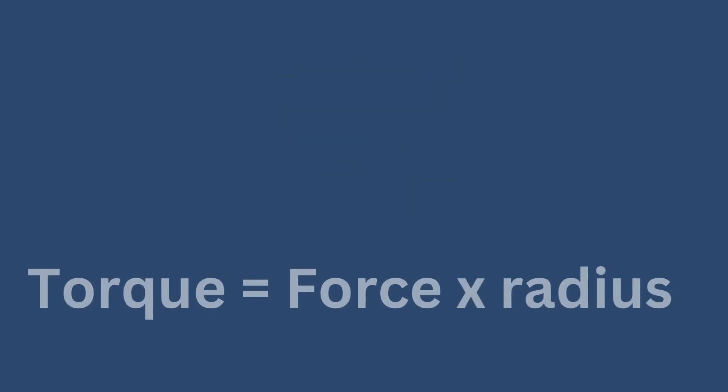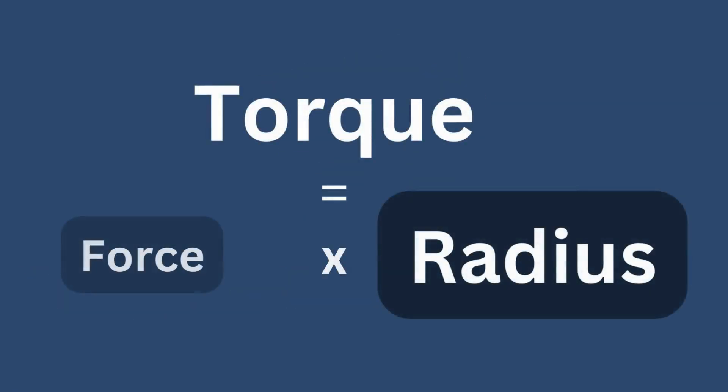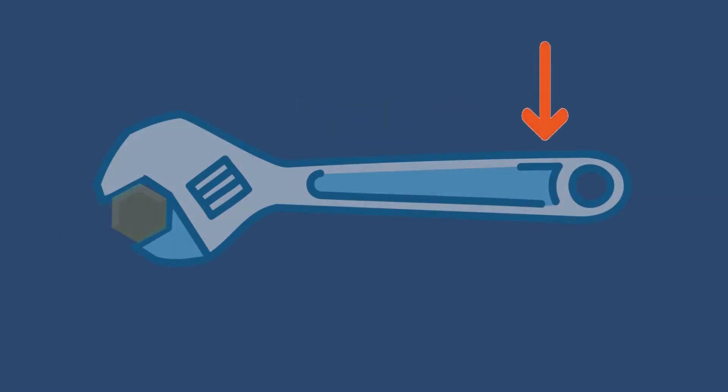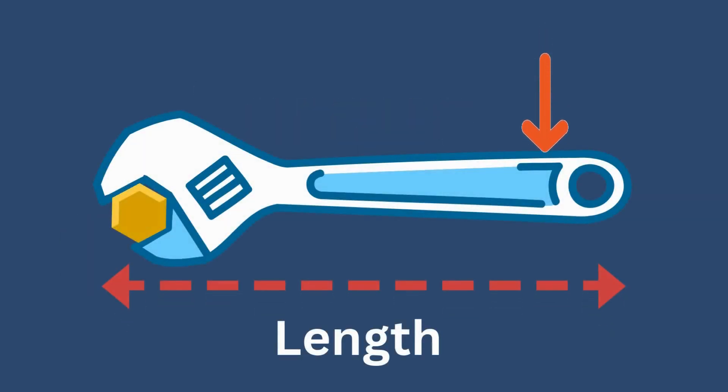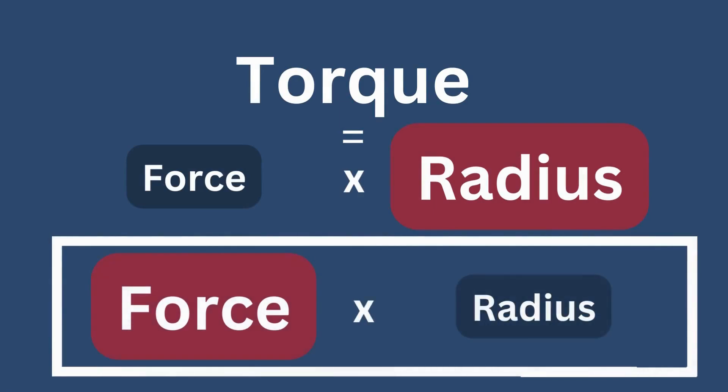From this equation, we can deduce that we can get a large torque, even with a small force, by having more radius. This is why it is better to hold the wrench on the edge. By holding it this way, you can exert less force to remove the bolt. Otherwise, you will have to exert more force because you have shorter length or radius.